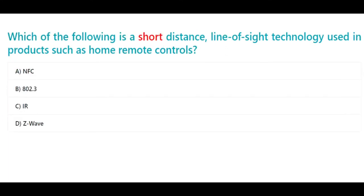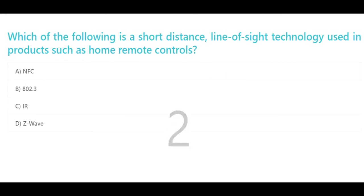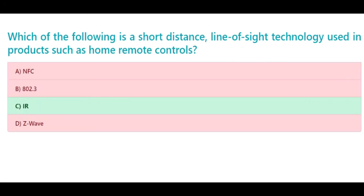Which of the following is a short-distance, line-of-sight technology used in products such as home remote controls? a. NFC, b. 802.3, c. IR, d. Z-Wave. The correct answer is c. IR.